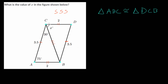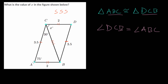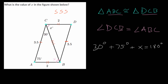Now that we know the two triangles are congruent, we can find the missing angle DCB. Angle DCB is equal to angle ABC. We don't know angle ABC directly, but we can figure it out since we know the other two angles. Setting up the equation: 30 degrees plus 75 degrees plus x equals 180 degrees. Subtracting 30 gives 150, then subtracting 75 gives x equals 75 degrees. So this missing angle is 75 degrees.